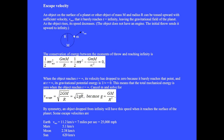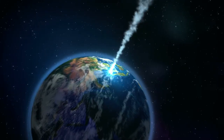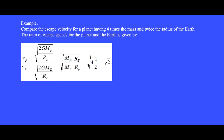By symmetry, an object dropped from infinity will have this same speed when it reaches the surface of the planet. Here are some escape velocities for the Earth, Mars, Moon, and the Sun. When objects strike the surface of the Earth, their velocity tells us about their origin. Compare the escape velocity for a planet having four times the mass and twice the radius of the Earth. The ratio of escape speeds is the square root of M_p over M_e times R_e over R_p, which equals the square root of four times one-half, making the square root of two.